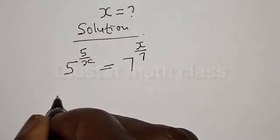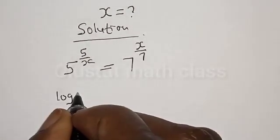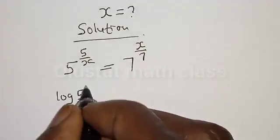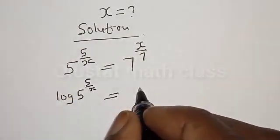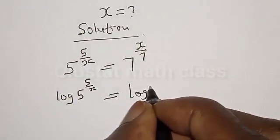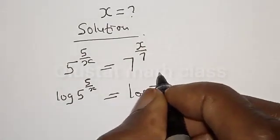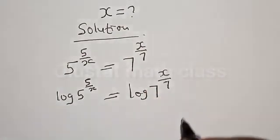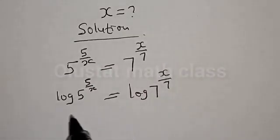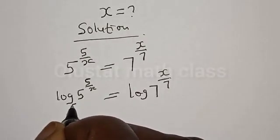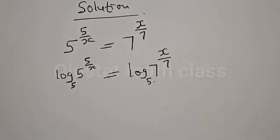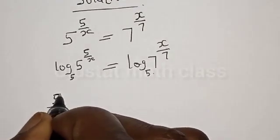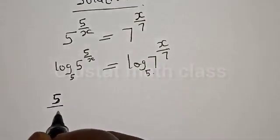We have log of 5 raised to power 5 divided by x, is equal to log of 7 raised to power x divided by 7. Now in this case we can choose any base, but I will prefer base 5. So this side is base 5 and this one is base 5.